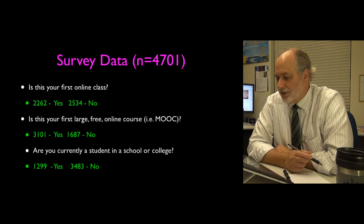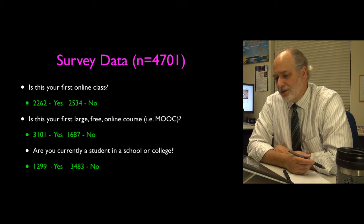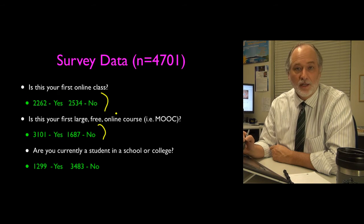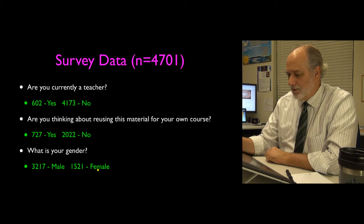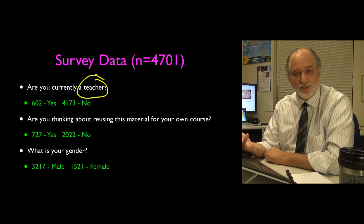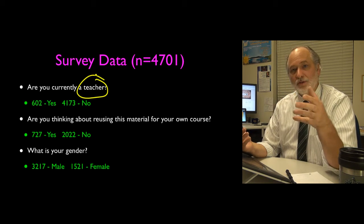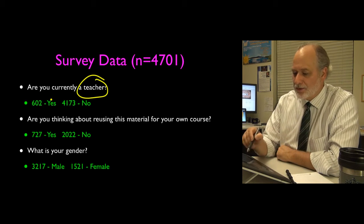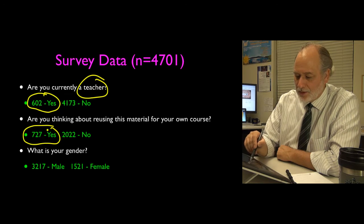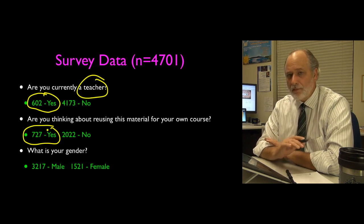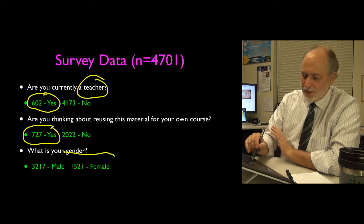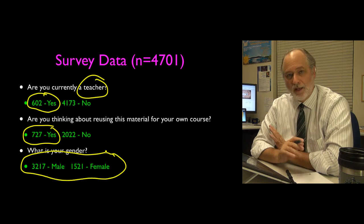The number of students with certificates is about half of those who completed the first week. To compare: we give about 6,600 undergraduate degrees per year at Michigan, and I interact with 152 students in my fall class. At about the two-thirds point I did a voluntary survey, and 4,701 of you answered. We can see that the online class was the first online class for about half of people, and the first large online class for about two-thirds.